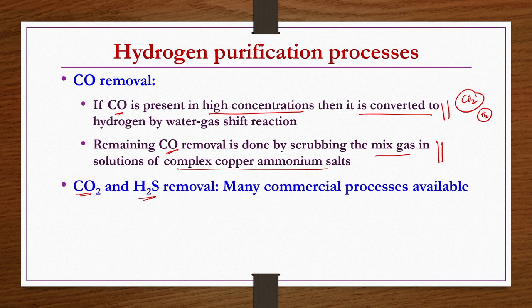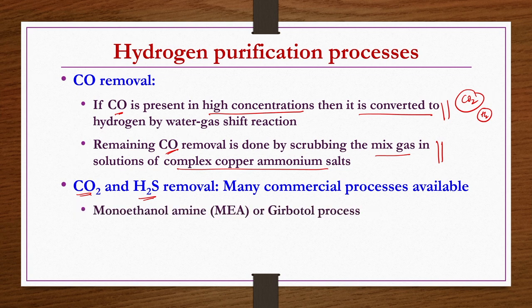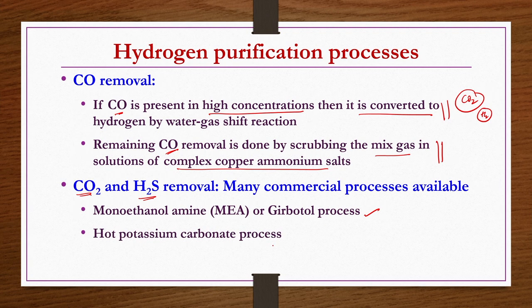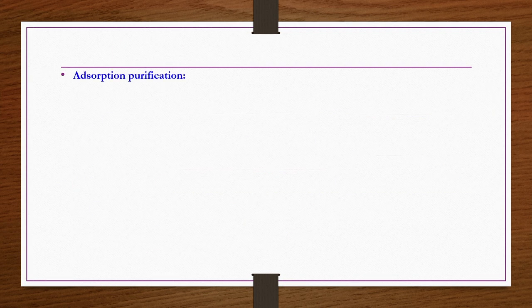For removing CO2 and H2S, many commercial processes are available, including monoethanolamine (MEA)/Girbatol process, hot potassium carbonate process, and physical solvent processes. For removing impurities such as CO2, H2O, methane, ethane, CO, Ar, and N2 from impure hydrogen streams, fixed bed adsorption is often used.